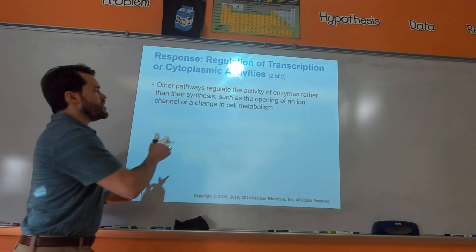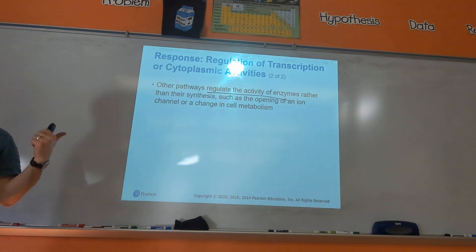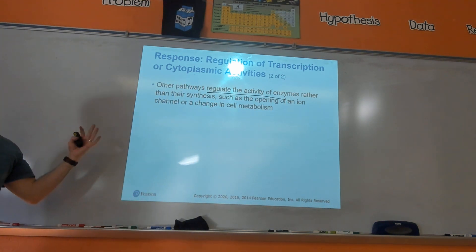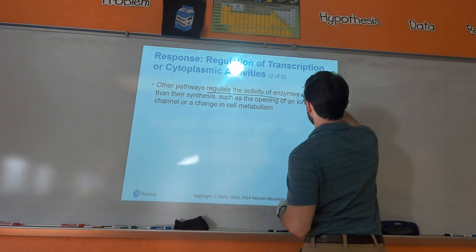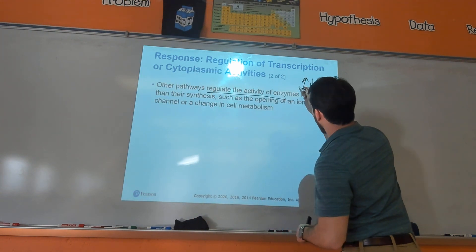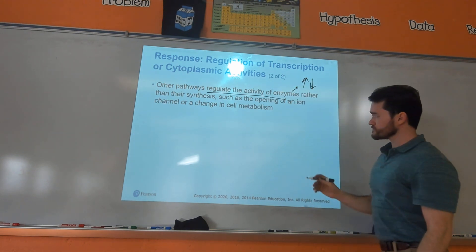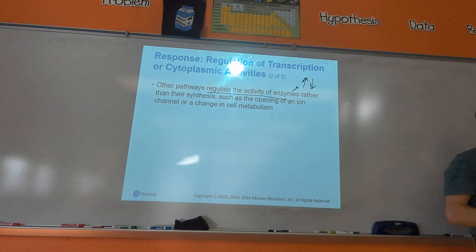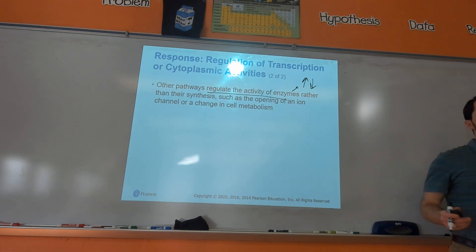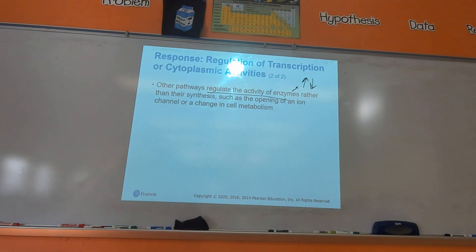Another cellular response is regulating the activity of enzymes. So we can either turn on or off genes, or another example of the cellular response could be turning on or turning down enzymes — making the enzymes be more or less active. Any questions? That's the last slide.